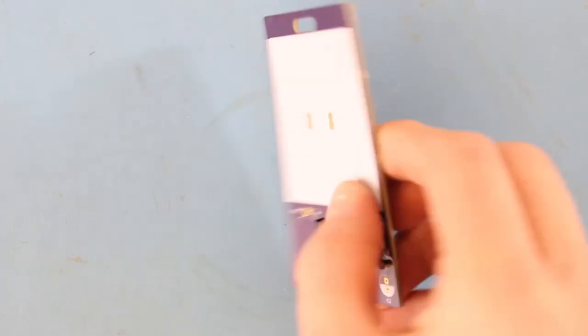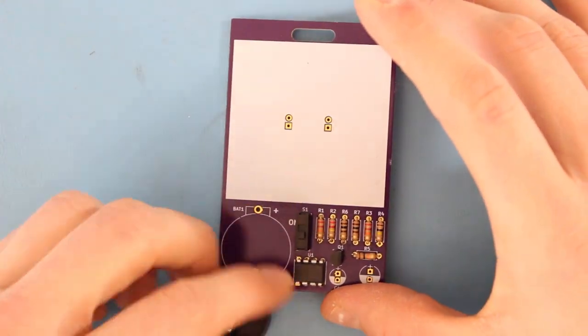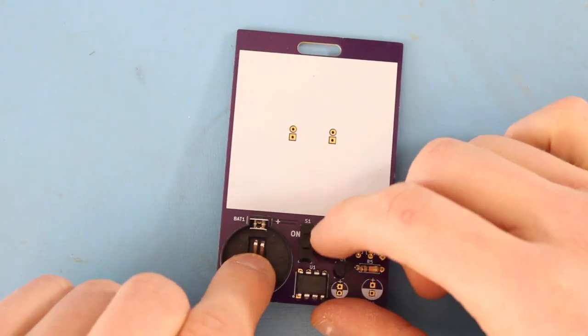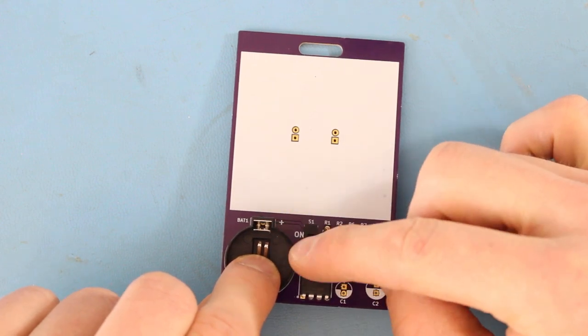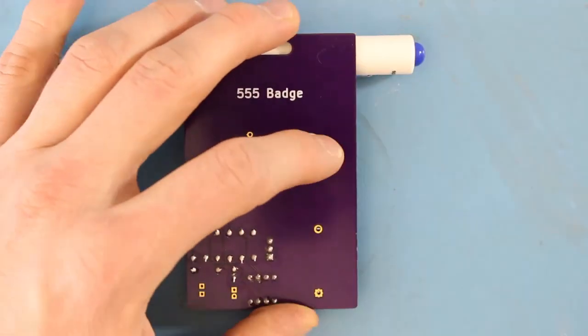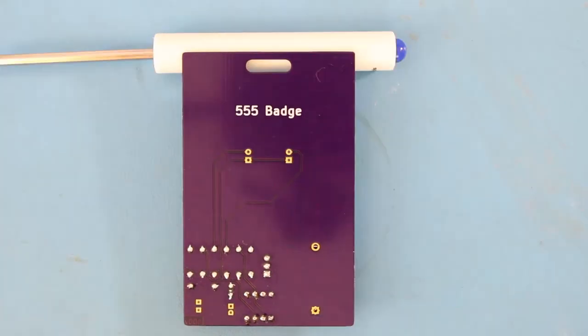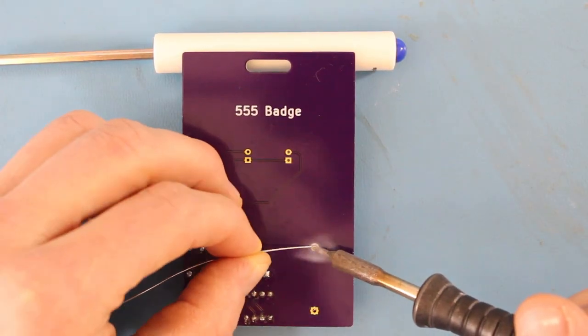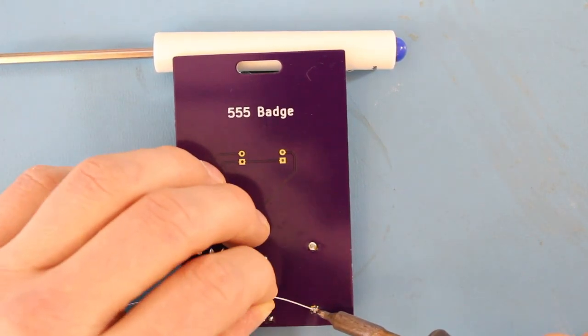Place the battery holder and note that it should line up with the outline drawn in silk. This will ensure that the polarity is correct. Flip the board over and balance it on another object. Solder the battery holder leads. They're short enough that you don't have to worry about clipping them.